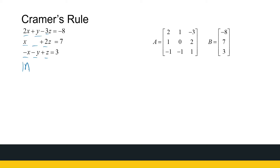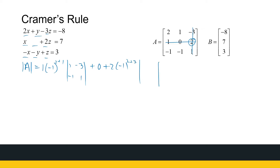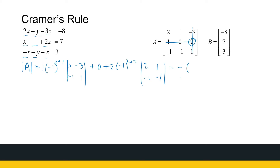Firstly, let's find the determinant of A, because we need that to be non-zero. I'm going to expand along the second row. I get 1 times (-1)^(2+1) times det(1, -3 / -1, 1), plus 0, plus 2 times (-1)^(2+3) times det(2, 1 / -1, -1). That gives me -1 times (1 - 3), which is -(-2), plus 0, minus 2 times (-2 - (-1)), so minus 2 times (-1). That gives me 2 + 2, which is 4.